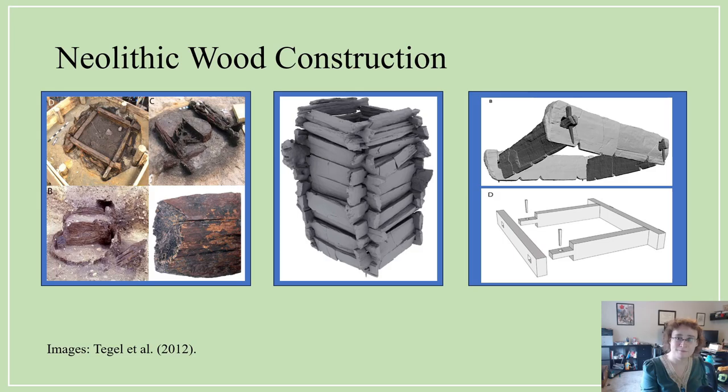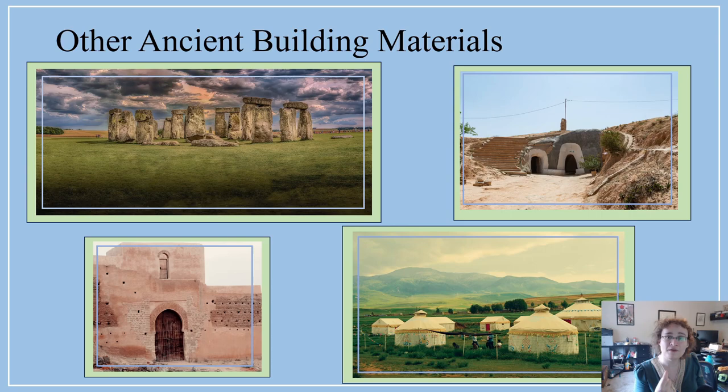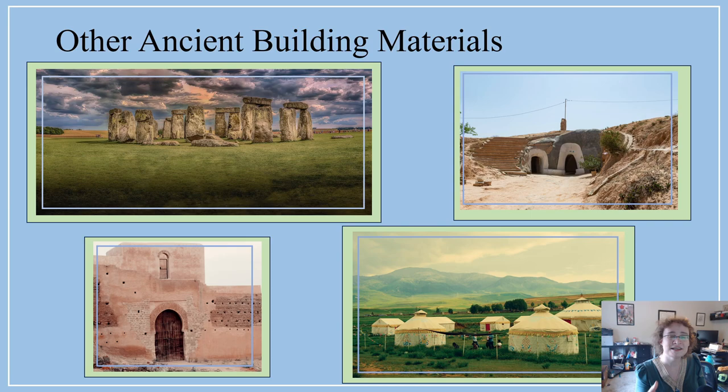Of course, wood was not the only ancient building material. Other common materials included stone, adobe, mud brick, fired bricks, cloth, and animal hide. In turn, we learned to work with metals, ceramics, and eventually a whole universe of modern building materials — the types of things we work with in modern engineering, such as steel, reinforced concrete, and any number of other modern materials.